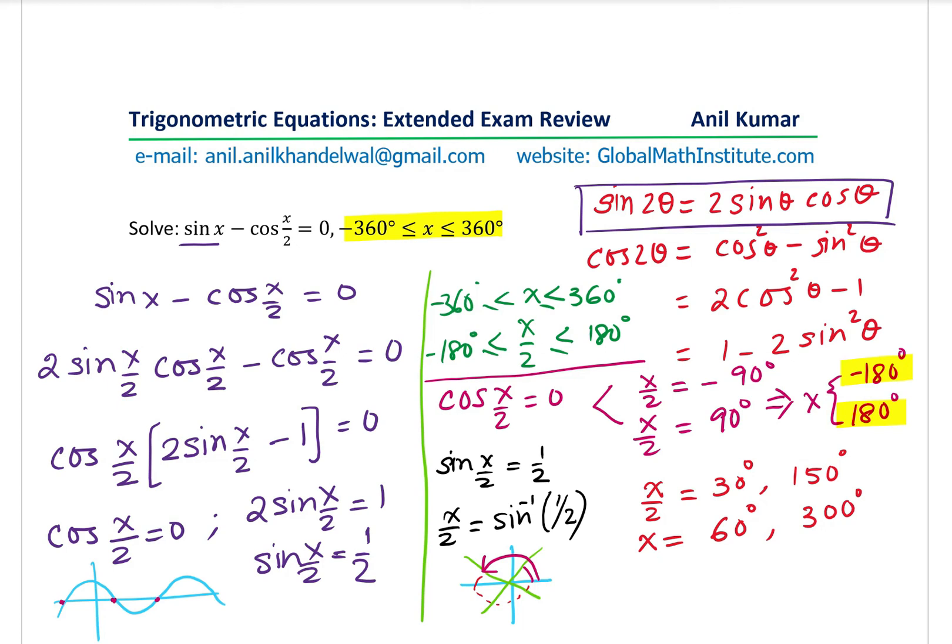So let me now write down the answer, which is equal to, let's say we write minus 180 degrees. We can write in any order. Let me write down those two first. And then we get 60 degrees and 300 degrees. So these are the four answers for the given situation.